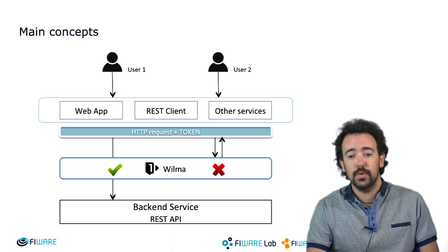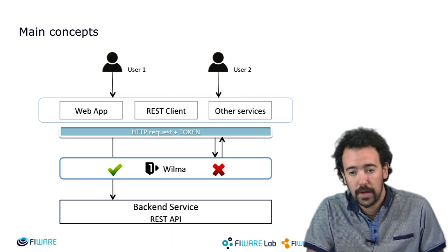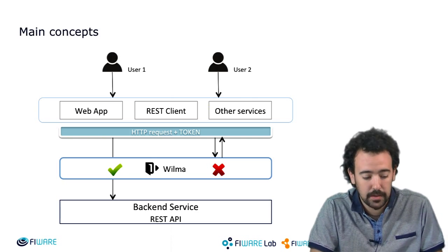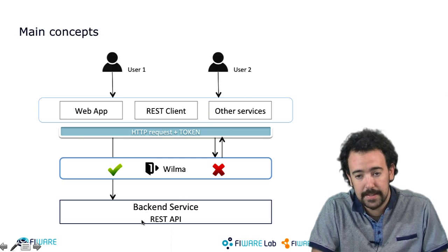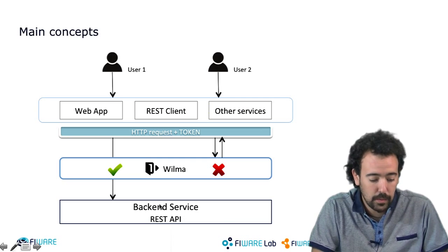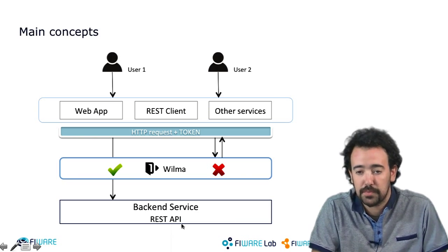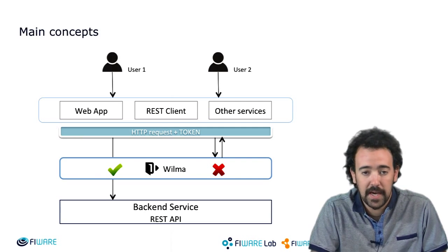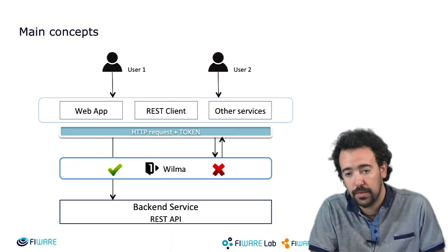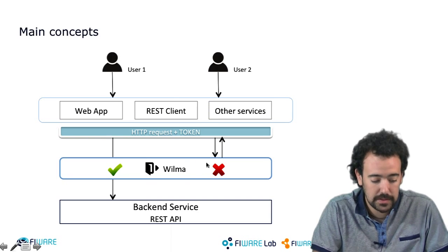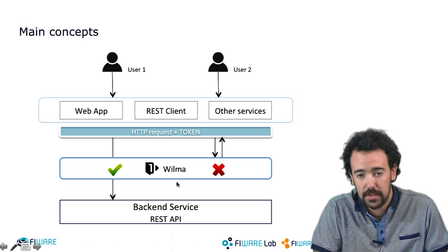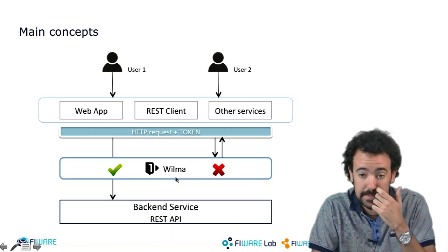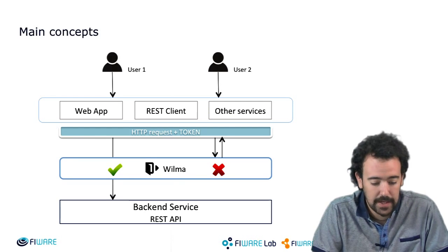In order to remember why you need to use this component, I want to summarize the architecture and the main goal of this component. When you have a backend service that is exposing a REST API and you want to add a security layer on top of this API in order to allow access to some users and deny access to others, you can introduce Wilma PEP Proxy to intercept the requests that users are sending to your REST API, in order to allow some requests and deny others.